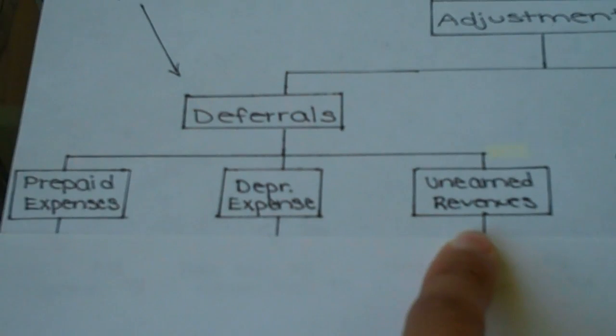Which again results from a customer paying in advance of receiving the service. According to the generally accepted accounting principles, we cannot recognize that revenue is earned until we perform the service. Therefore, we classify it as a liability called unearned revenue.